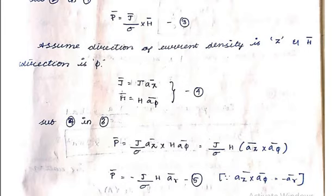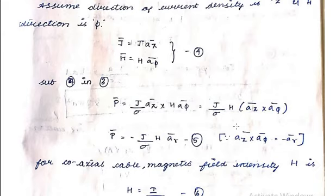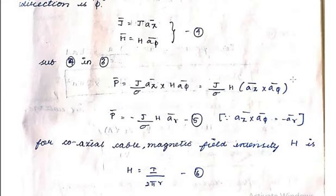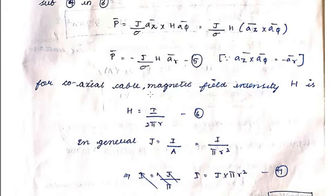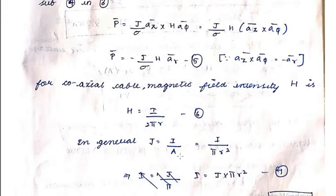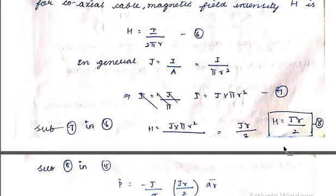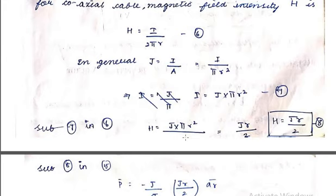So J = J·aZ and H = H·aφ. Substituting: P = (J/σ)aZ × H·aφ. The cross product of aZ and aφ gives −aρ, pointing radially inward. For a coaxial cable, the magnetic field intensity H = I/(2πr). The current I can be expressed in terms of current density as I = J·A, where A = πr². Substituting into H: H = J·πr²/(2πr) = Jr/2. Substituting this back into the power expression gives P = −(J²r)/(2σ) · aR.